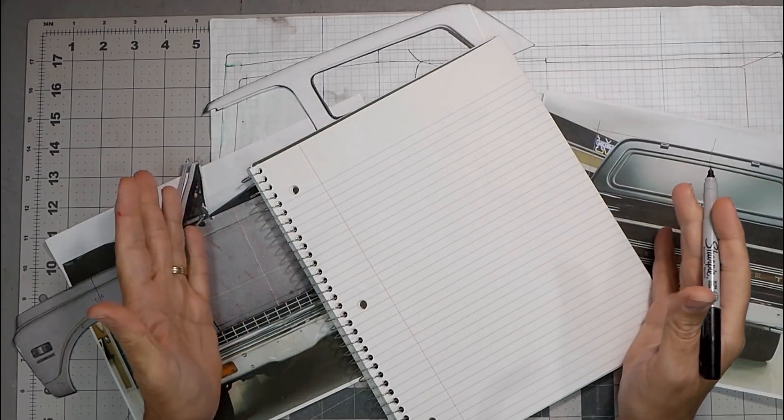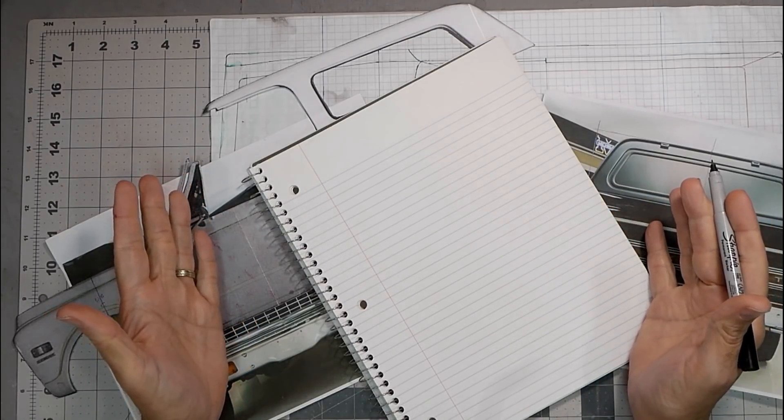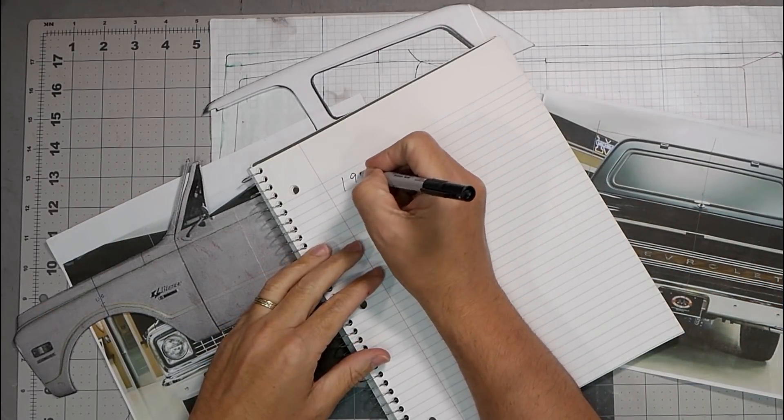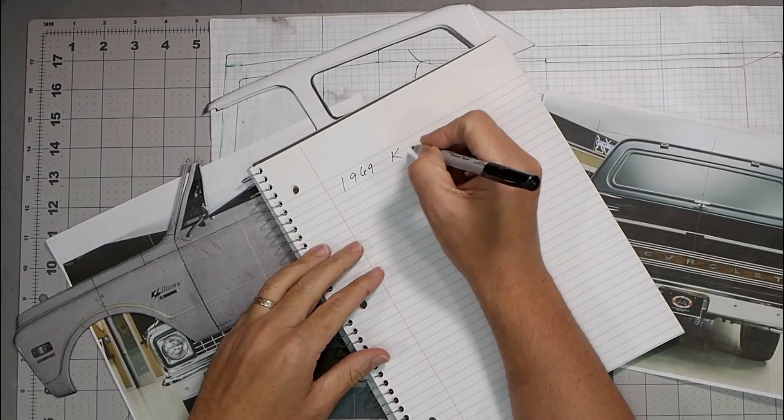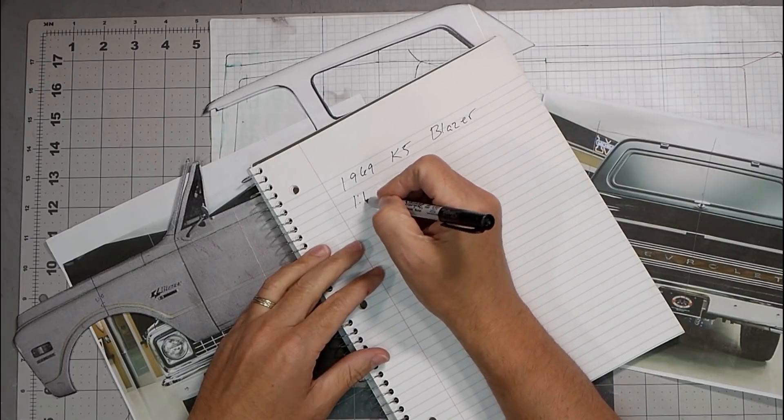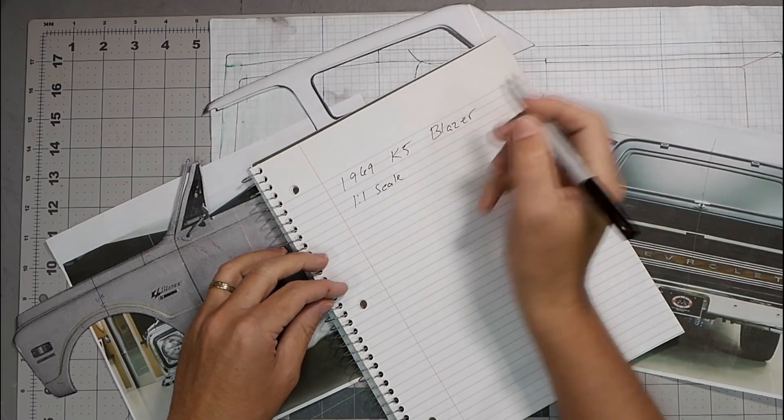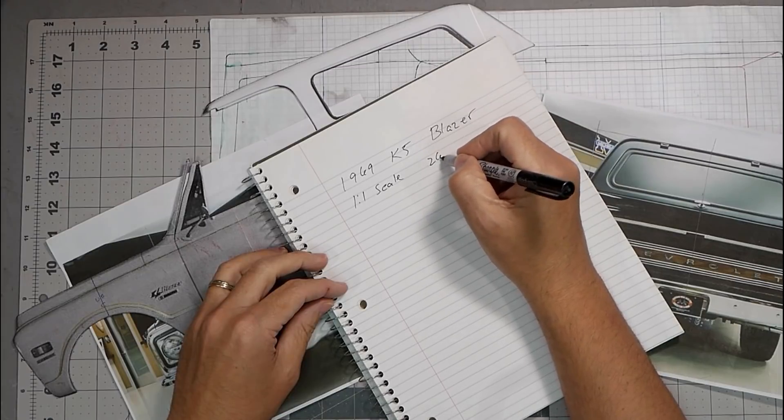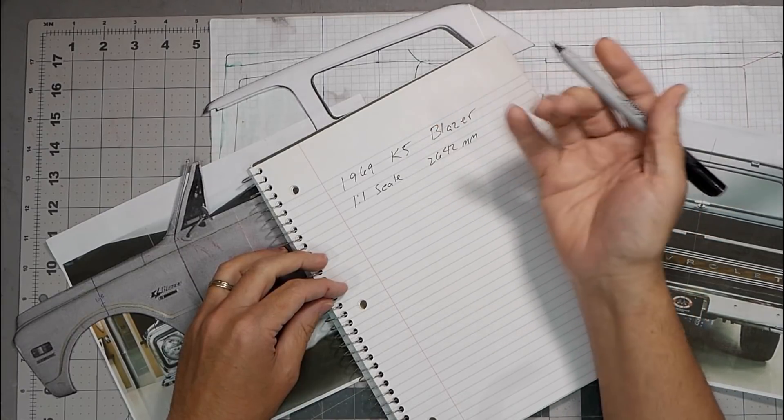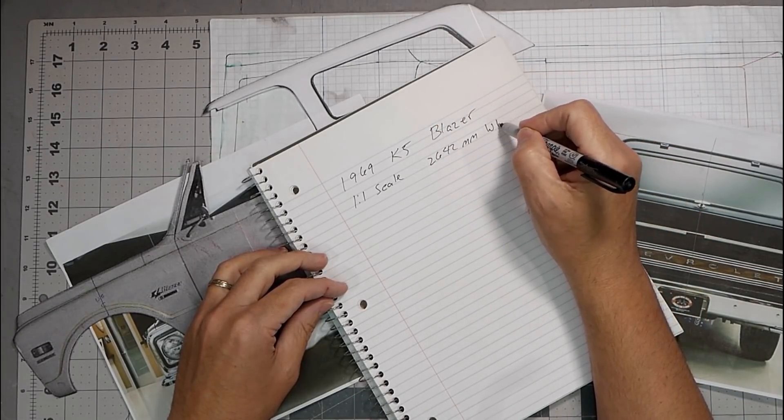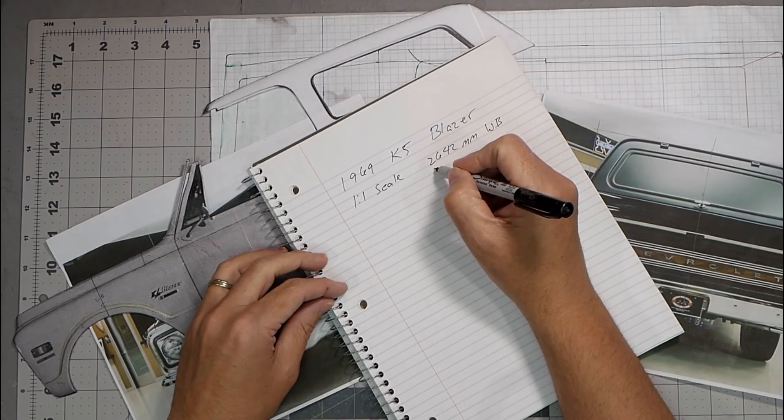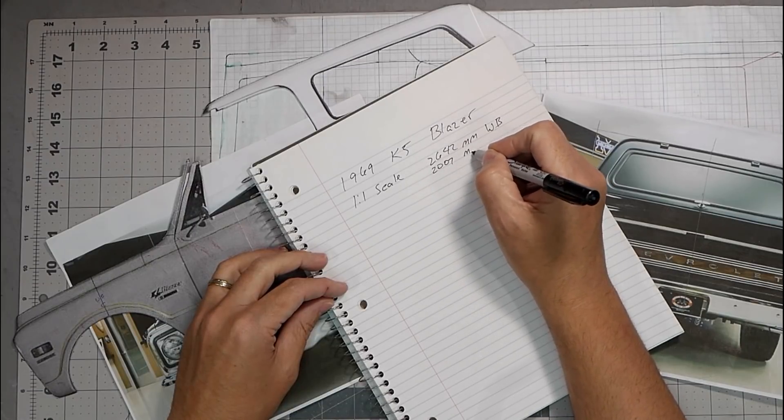The first thing you need to do when you're figuring the scale is you need to have all of your information. So you need to do a little bit of homework. What we're looking at here is a 1969 K5 Blazer. When I looked that up, the 1 to 1 scale is 2642 millimeters, probably came in inches but I just converted over to millimeters. And that is the wheelbase. I also looked at the width and that is 2007 millimeters.